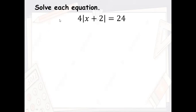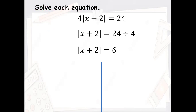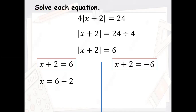Here, the number next to the absolute value with no sign between them means it's multiplied — just like parentheses mean multiply. So the opposite of multiply is divide: 24 divided by four gives you six. Now you write two equations: x plus two equals six, and x plus two equals negative six. Solving gives x equals four and x equals negative eight. These are detailed in the previous video — click the i-card above if you need to review.